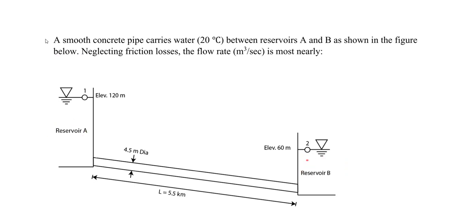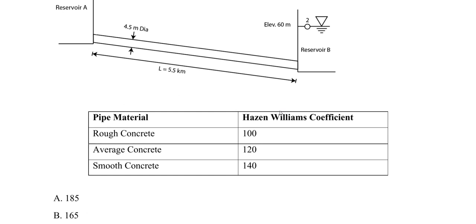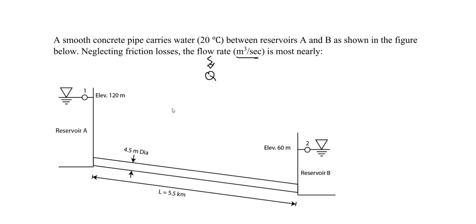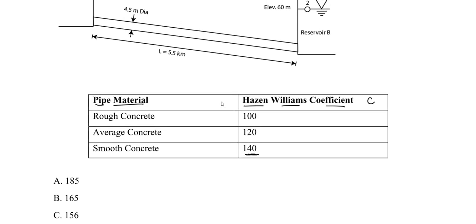We have reservoir A, reservoir B, and a smooth concrete pipe carrying water at 20 degrees Celsius. Neglecting friction losses, the flow rate in cubic meters per second is most nearly what? We're trying to determine our flow rate Q value in cubic meters per second. We're going to use the Hazen-Williams equation with a coefficient C of 140 for smooth concrete pipe.